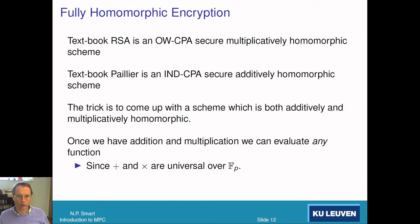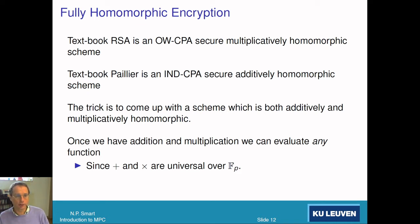You may have heard of the RSA algorithm. The textbook RSA gives you C = M^e mod N. This is a one-way CPA-secure multiplicatively homomorphic scheme — you can multiply two ciphertexts together and you basically multiply the underlying plaintexts mod N.